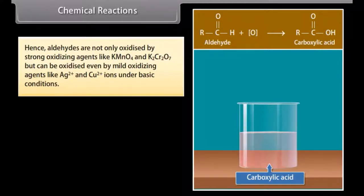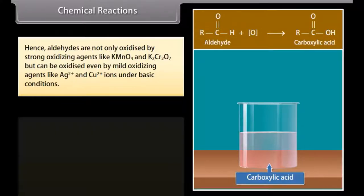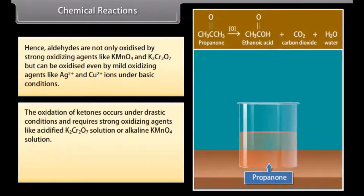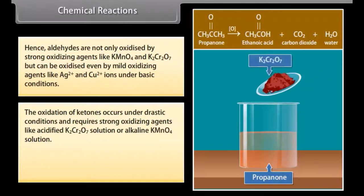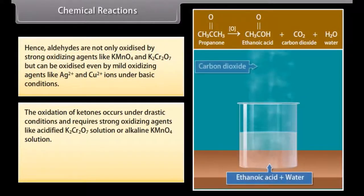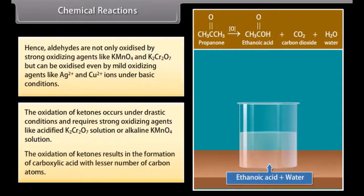but can be oxidized even by mild oxidizing agents like Ag2+ and Cu2+ ions under basic conditions. The oxidation of ketones occurs under drastic conditions and requires strong oxidizing agents like acidified potassium dichromate solution or alkaline potassium permanganate solution. The oxidation of ketones results in the formation of carboxylic acid with a lesser number of carbon atoms.